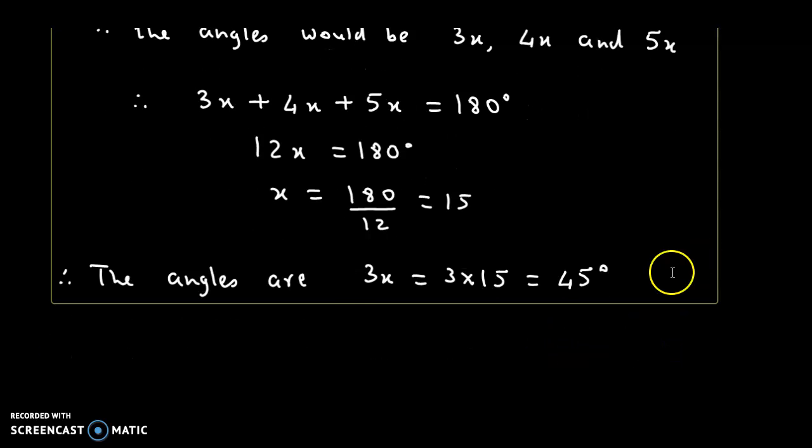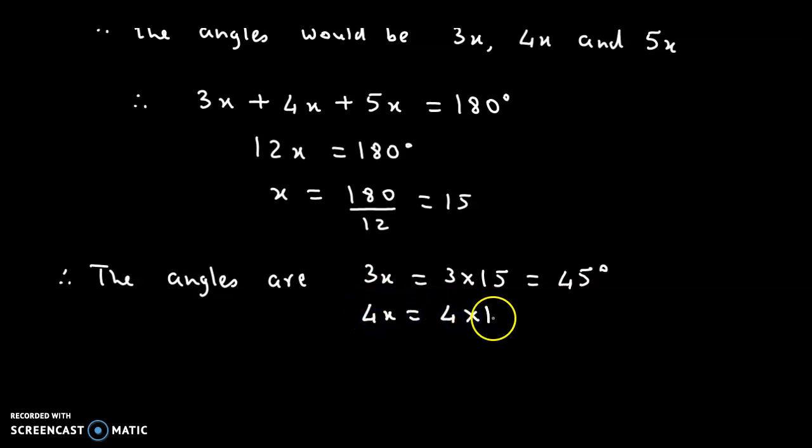Next is 4x, so that would be 4 × 15, which is 60°. And the last one, that's 5x, so it would be 5 × 15, and that equals 75°. So these are the required angles of the triangle.